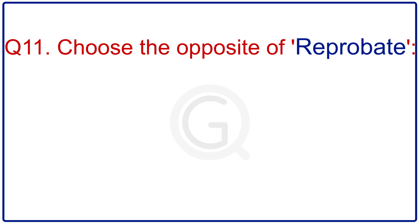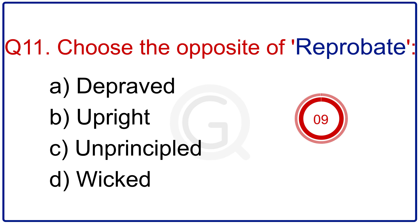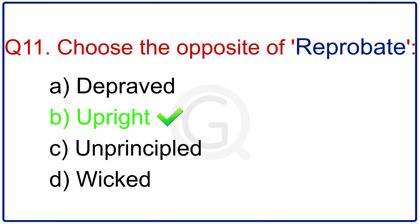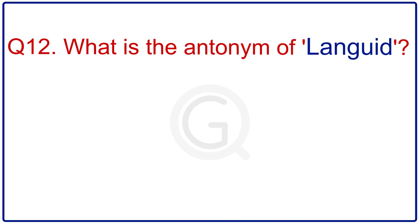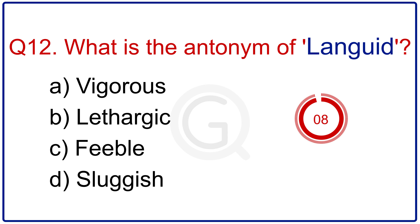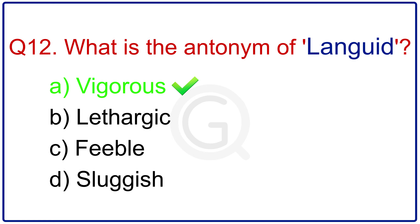Choose the opposite of reprobate. The right answer is upright. What is the antonym of languid? The correct answer is vigorous.